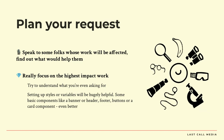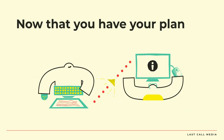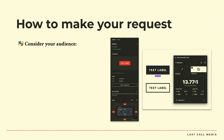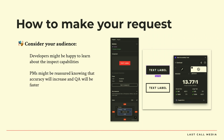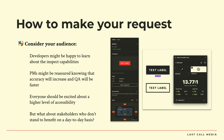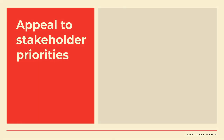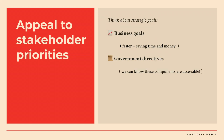Setting up styles or variables will be hugely helpful. Other basic components like a banner, header, footer, buttons, and card components — even better. Now that we have a plan, how do you make your request? Consider your audience. Developers might be happy to learn about the inspect capabilities in different software. PMs might be reassured knowing that accuracy will increase and QA will be faster. Everyone should be excited about a higher level of accessibility. But what about stakeholders who don't stand to benefit on a day-to-day basis? You want to appeal to stakeholder priorities — think about their strategic goals and business goals. That might mean we're working faster, saving time and money. For government directives, we can know that these components are accessible because we've checked them.